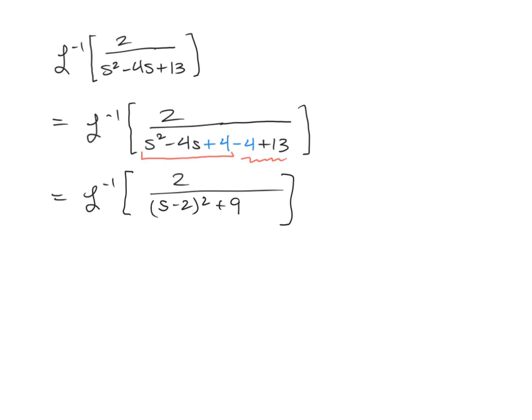But once again, we have the same issue we've seen before, where we need to have the 3 be in our numerator for this to be a true inverse. So just like before, we will multiply the top and bottom of this expression by 3.